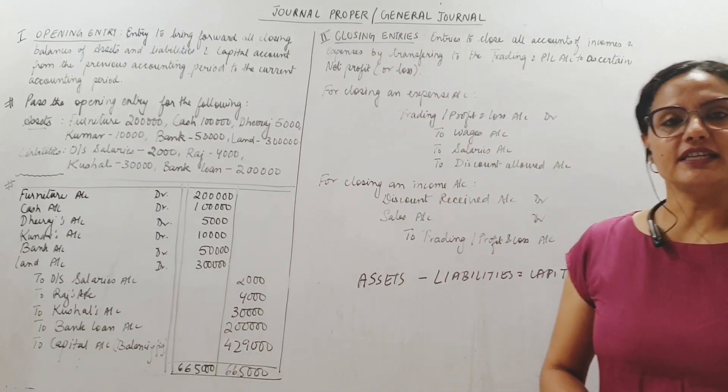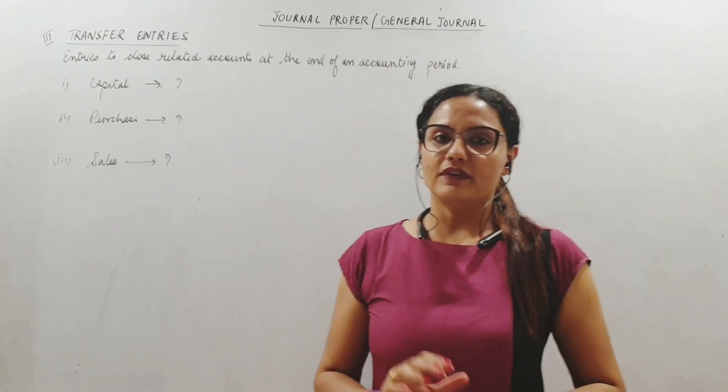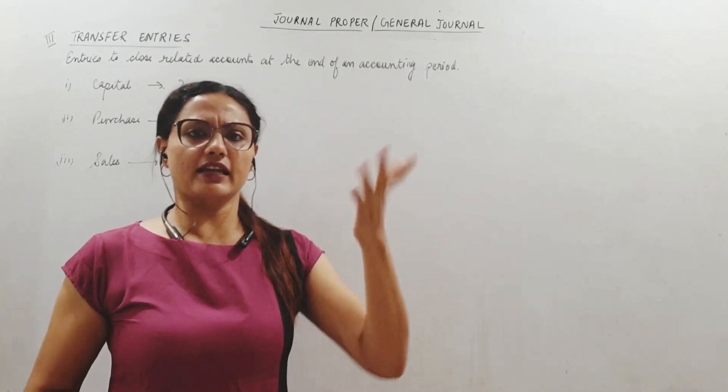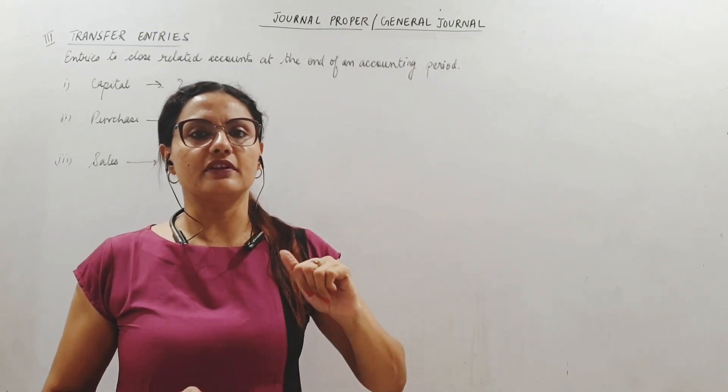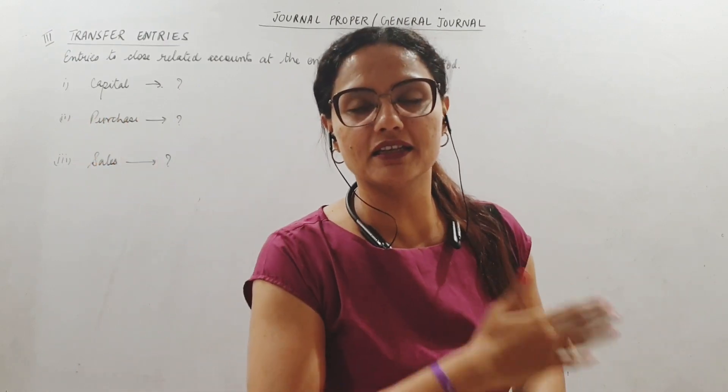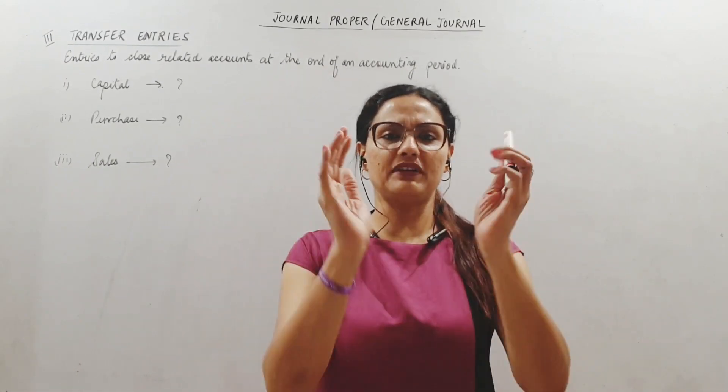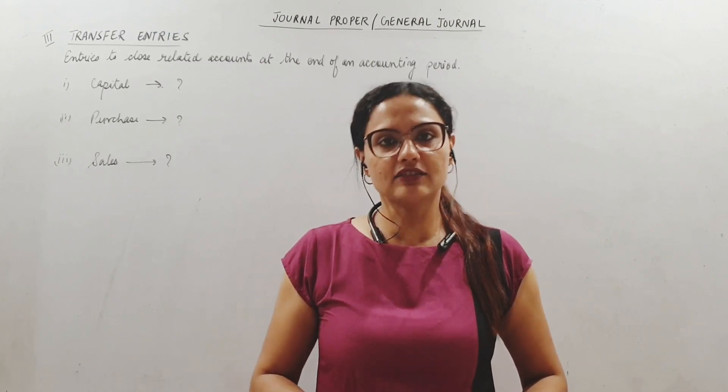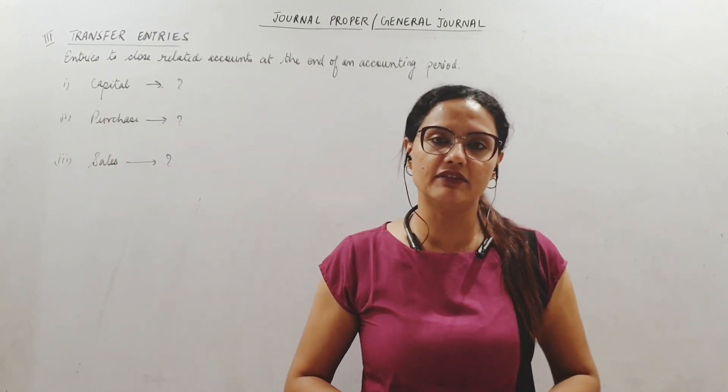There is one more set of entries called transfer entries. We have always done while doing journal that whenever the proprietor brings in capital, we credit capital. But when he takes out the capital invested, amount invested, we do not debit capital - we debit drawings account. They are related accounts. Capital shows the amount of money the proprietor is bringing into the business, and drawings will show how much he has taken out. In effect, what is happening? Capital went in, some was taken out, net balance remaining? Capital minus drawings, that is the amount left. These are related accounts, meaning capital minus drawings will give me the balance amount of capital on any given date.